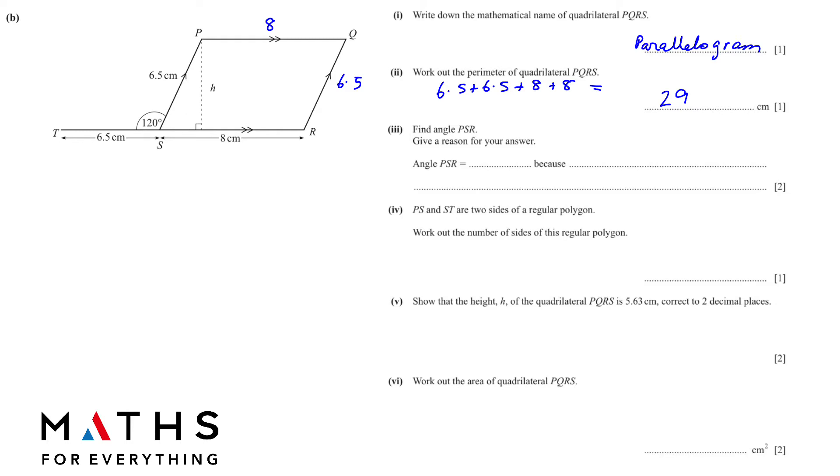Moving to part three, find angle PSR. PSR and give a reason for your answer. Whenever you have a straight angle, this is a straight line and this angle, they are straight angles. When you add them, they equal to 180. So to find this one, we are going to subtract 180 minus 120. It is 60 because angles on a straight line equal to 180.